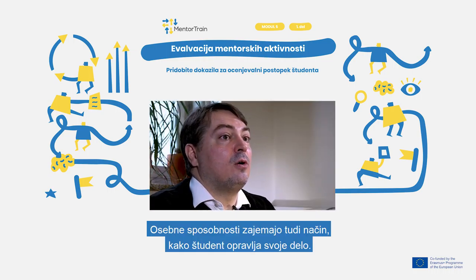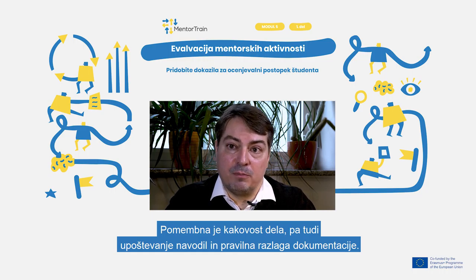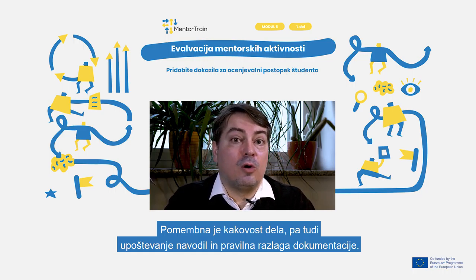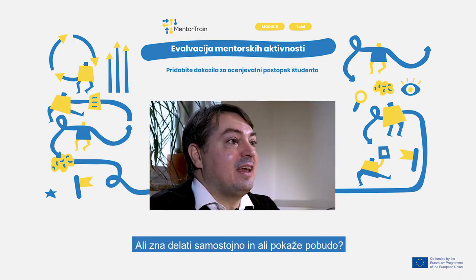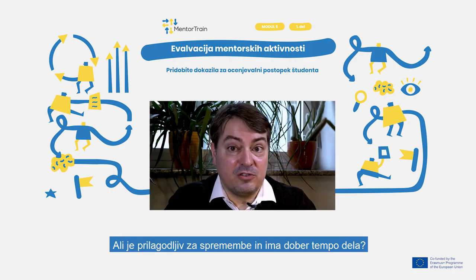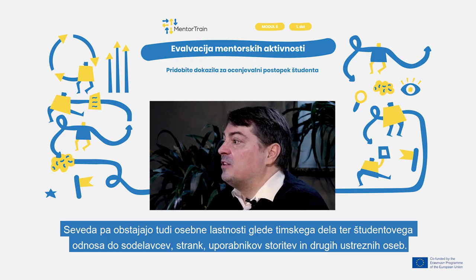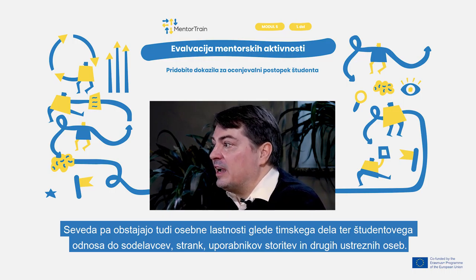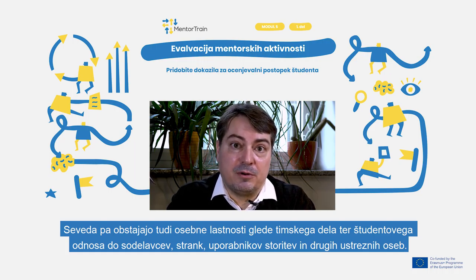Personal abilities also include the way the apprentice performs their work. The quality of work is important here, but for example also if they follow instructions and interpret documentation correctly. And can they work autonomously, show initiative, are they flexible to change and have a good work pace? And of course there are personal attributes around teamwork and how the apprentice relates to colleagues, customers, service users and other relevant people.